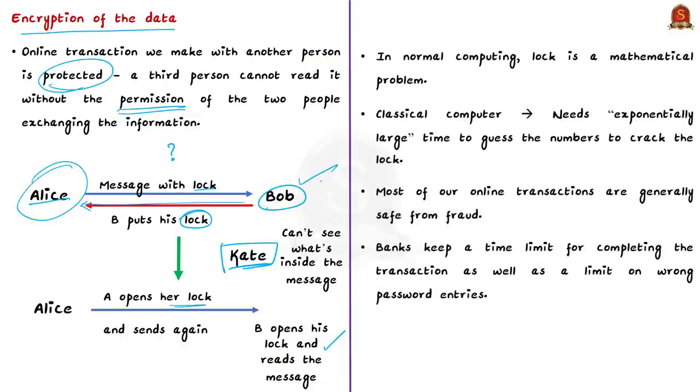In normal computing, the lock in the above example means a mathematical problem. Alice may use two big numbers and multiply them and use this product as lock. Similarly, Bob will also set his own lock. If Kate wants to open the lock, she must solve this complicated problem involving very big numbers. This is a very difficult task because if the numbers are large enough, the problem becomes very difficult to crack for a classical computer. Most of our online transactions are generally safe from fraud.